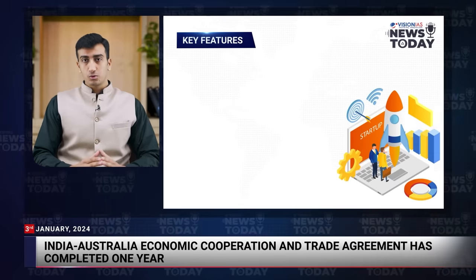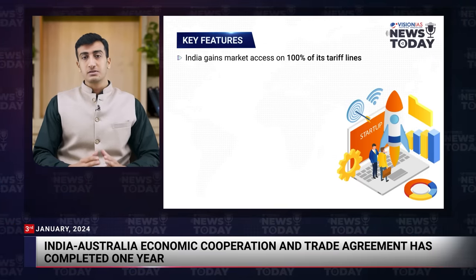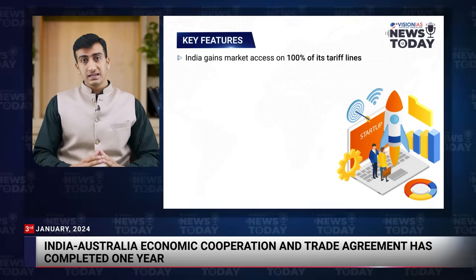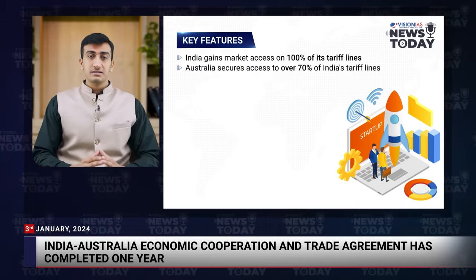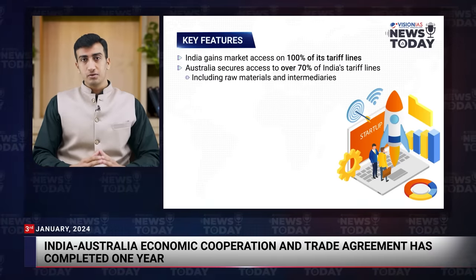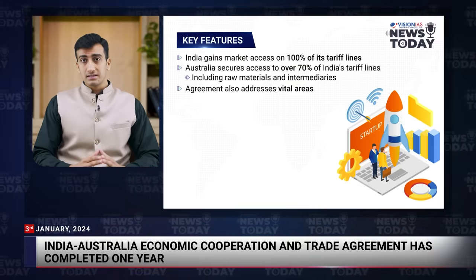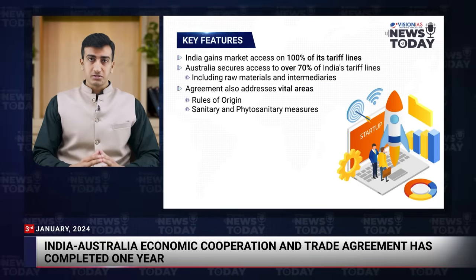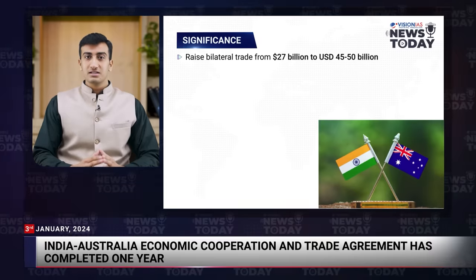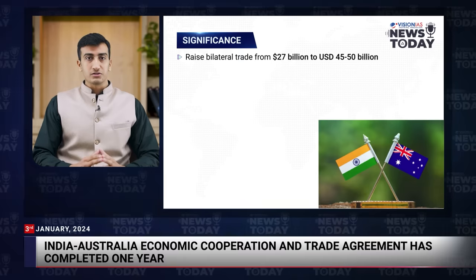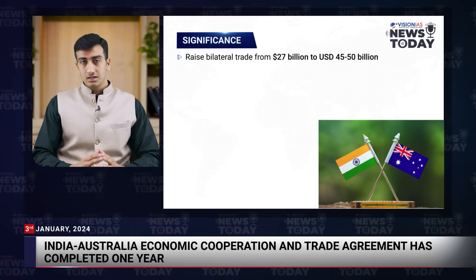Key features of the India-Australia Economic Cooperation and Trade Agreement include India gaining preferential market access on 100% of its tariff lines, especially benefiting key export sectors like gems, textiles, and footwear. In reciprocation, Australia secures preferential access to over 70% of India's tariff lines, including significant raw materials such as coal, mineral oils, and wines. The agreement also addresses rules of origin, sanitary and phytosanitary measures, and dispute settlement. Its significance lies in potential to elevate bilateral trade from approximately US$27 billion to US$45–50 billion within the next five years.